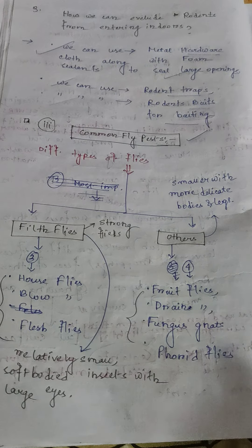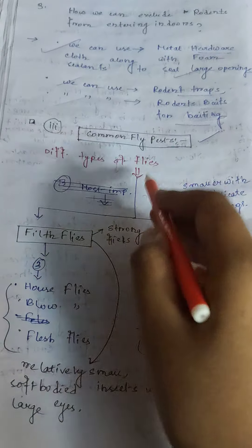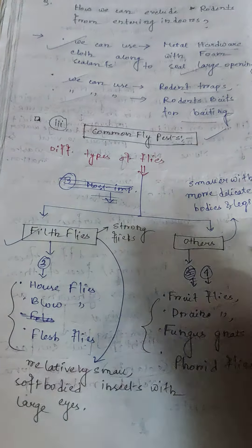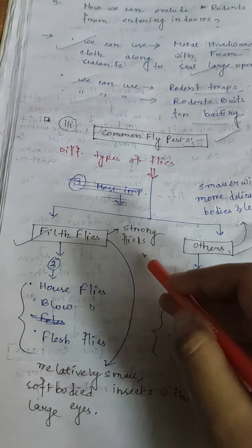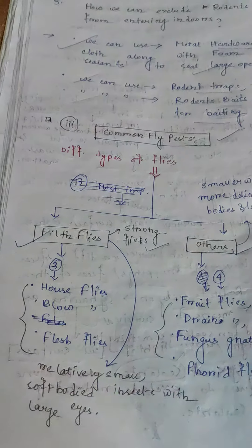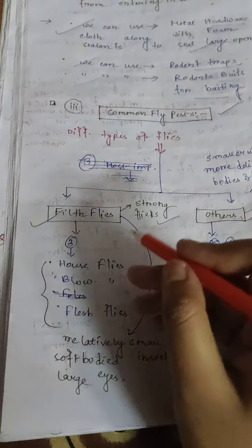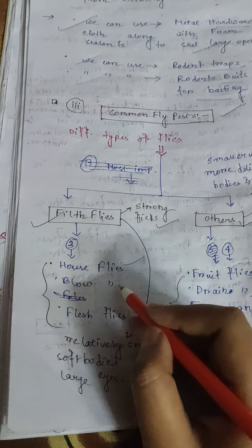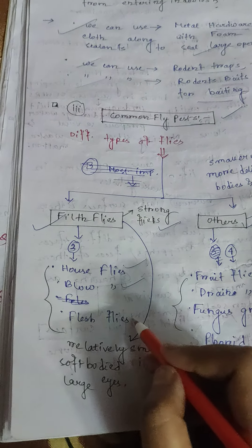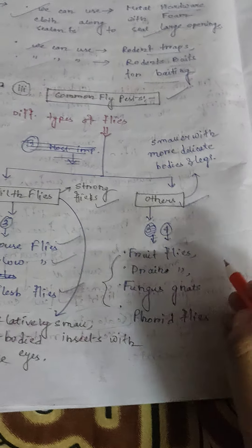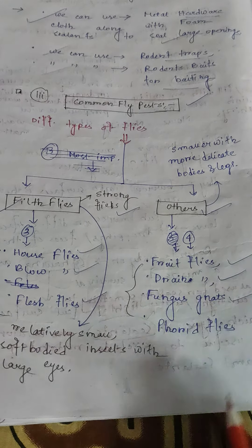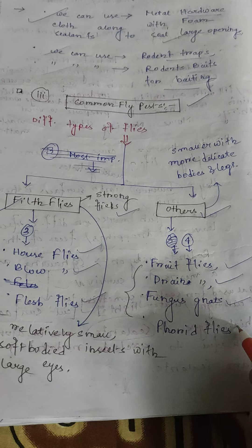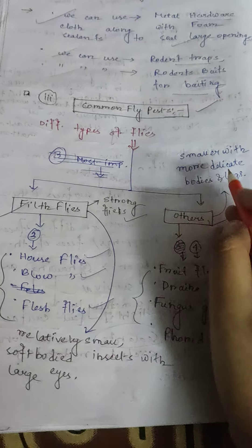Cockroach feces produce an oily-type odor. Cockroach bait stations are used along with targeted use of insecticides after business hours to reduce the amount of insecticides needed. Methods include crack and crevice treatment and spot treatment.